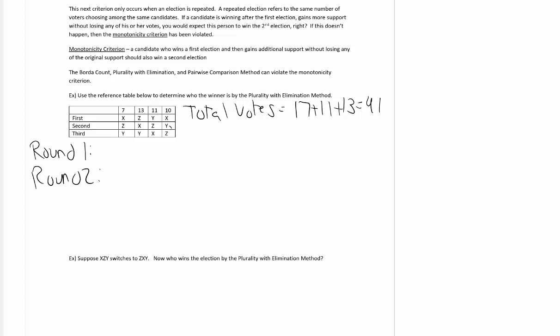The Borda count, plurality with elimination, and pairwise comparison method can violate the monotonicity criterion. Let's use the reference table below to determine who the winner is by plurality with elimination. First of all, I need to add up the total number of votes. That'll be 7 plus 13 plus 11 plus 10.